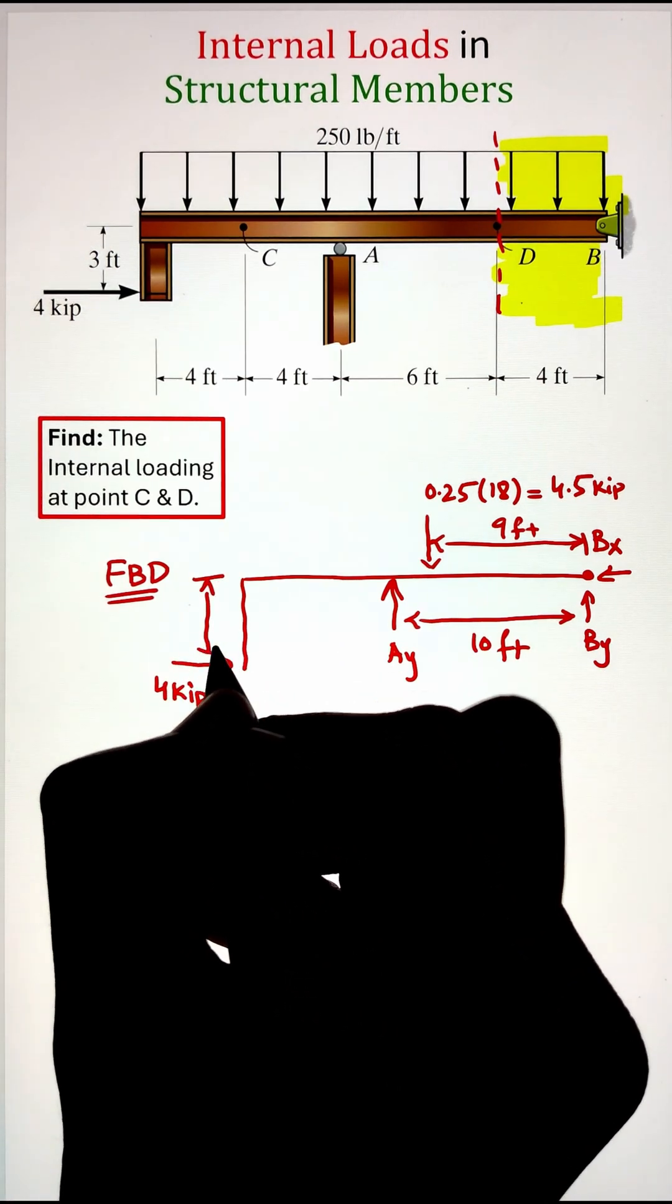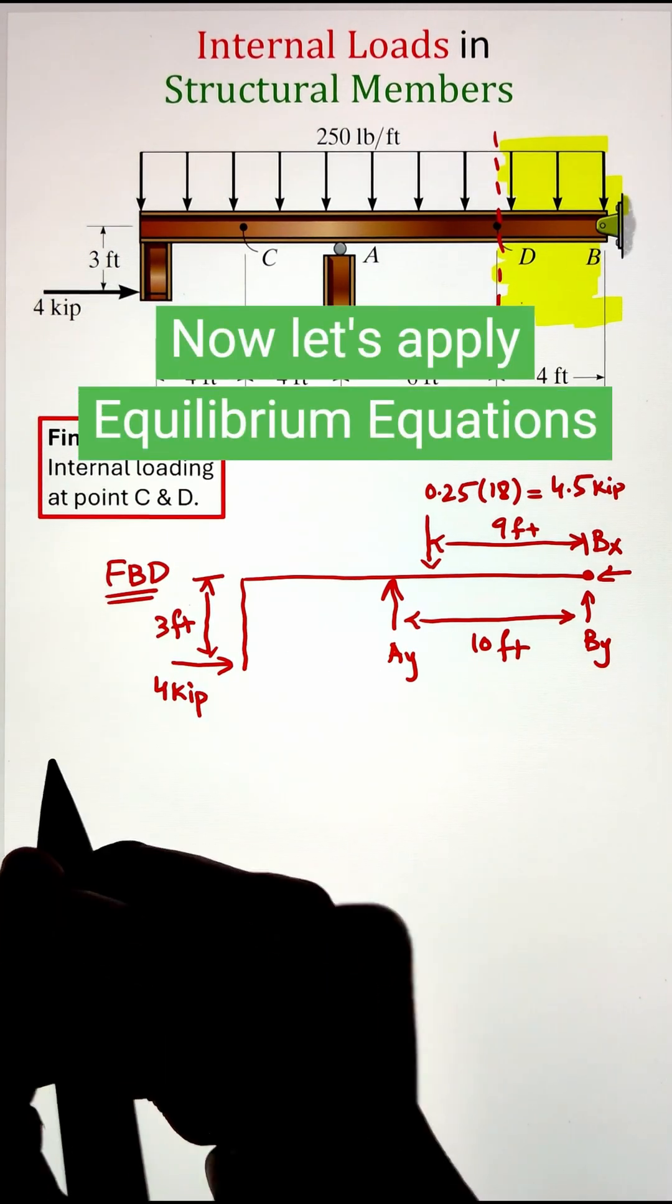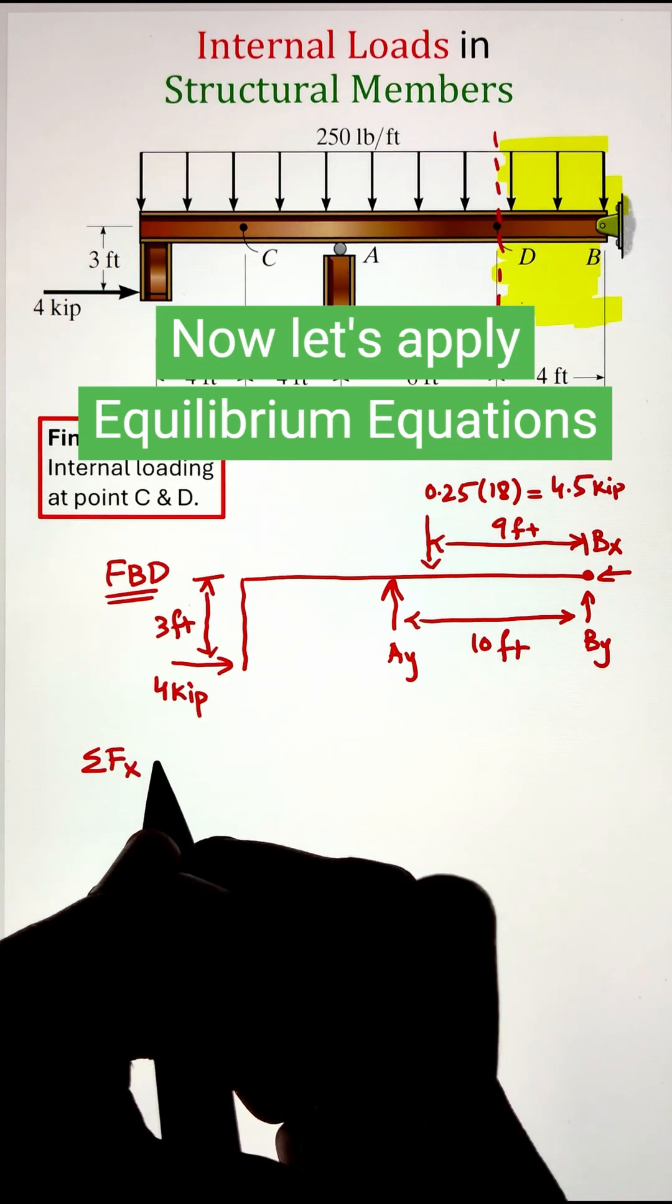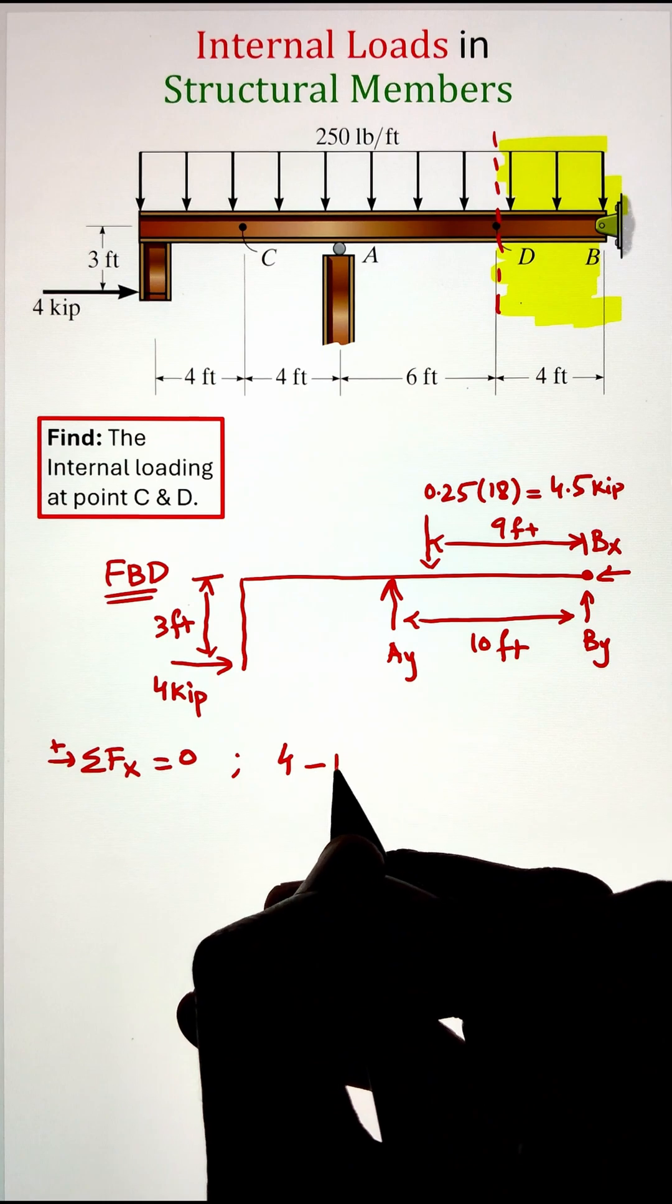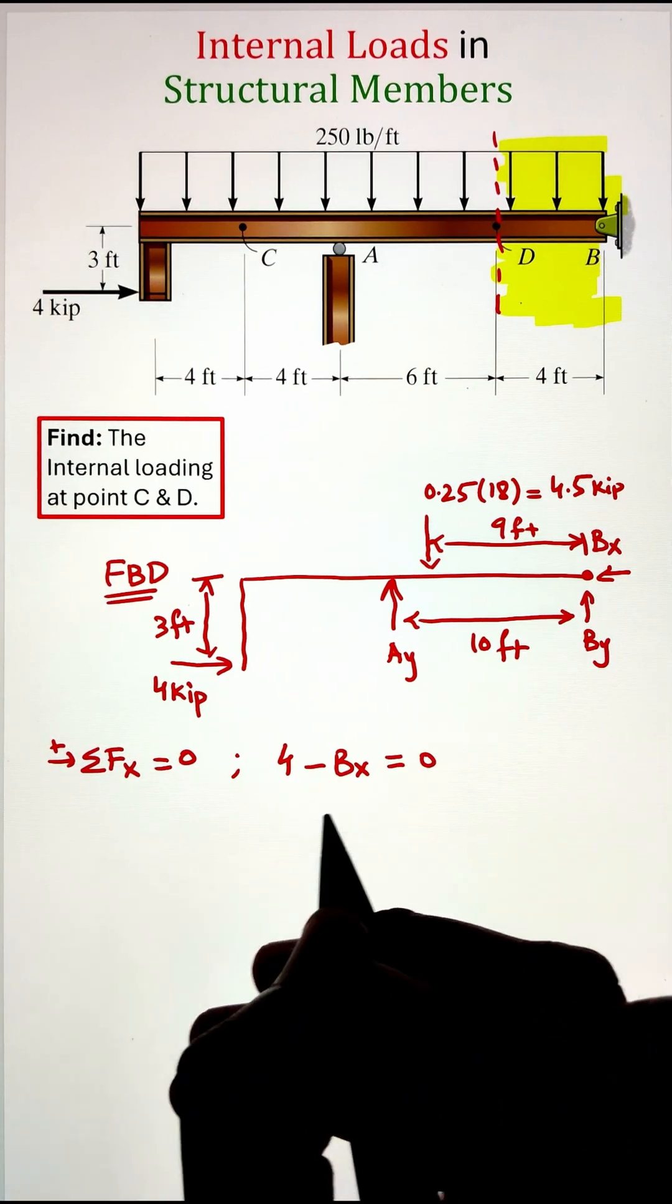Once we have the free body diagram, we can go ahead and start applying the equilibrium equations. So starting with summation of forces along the x-axis equals zero, we have only one force acting along the x-axis of 4 kilopounds. So that will equal our PX.